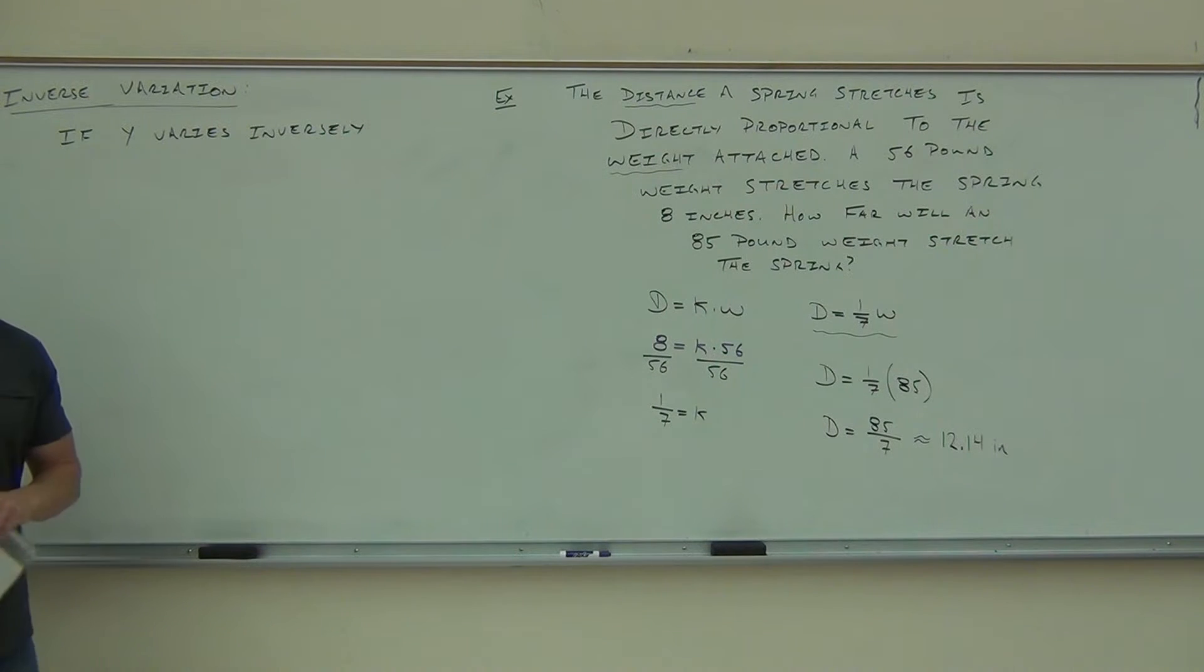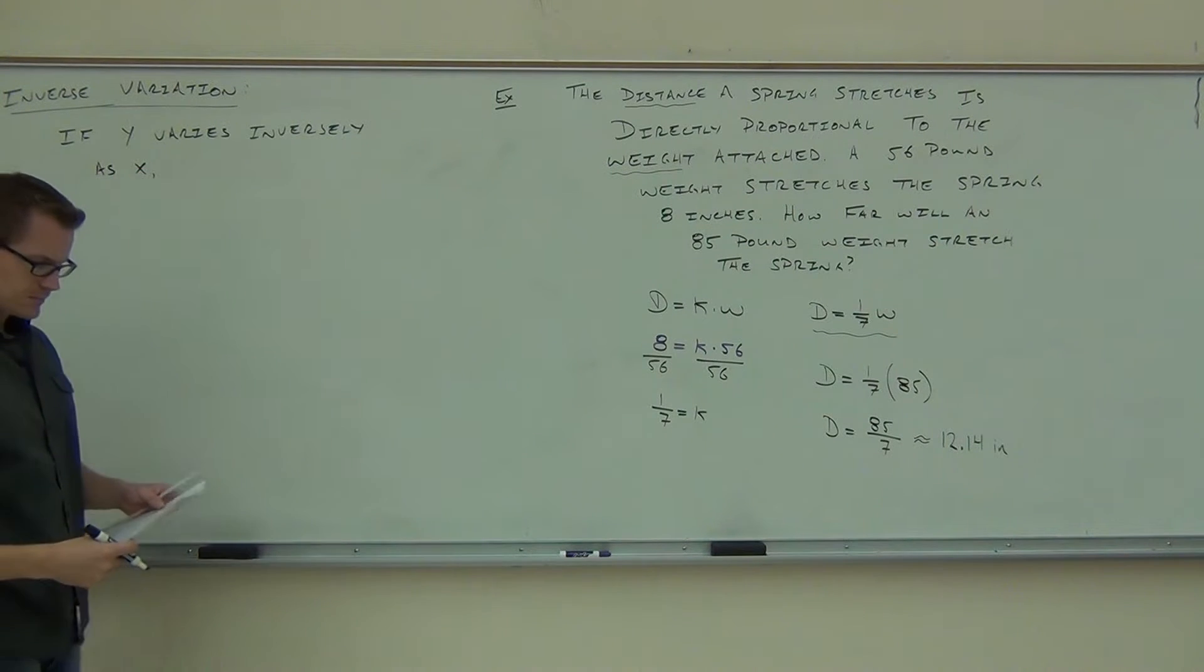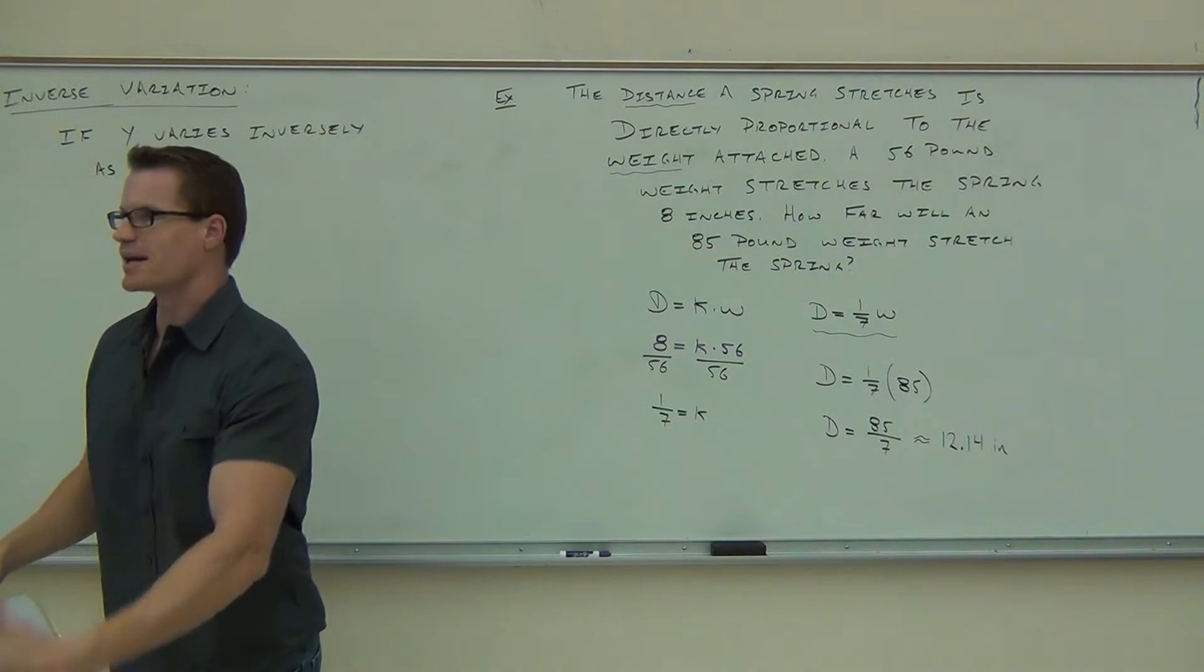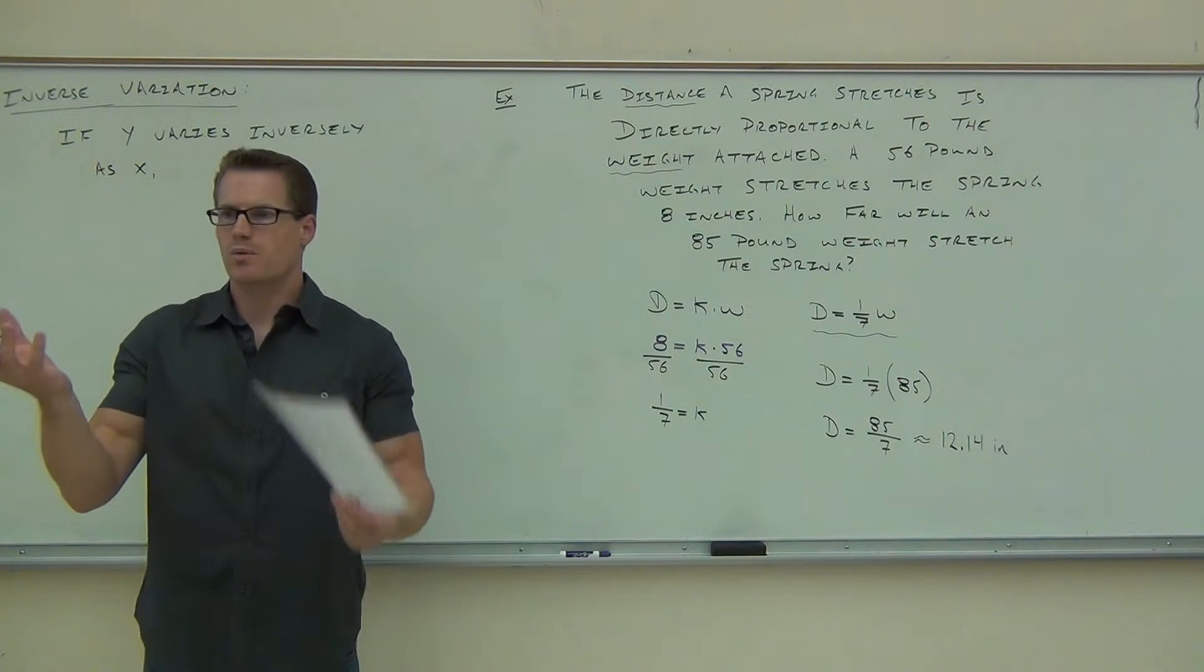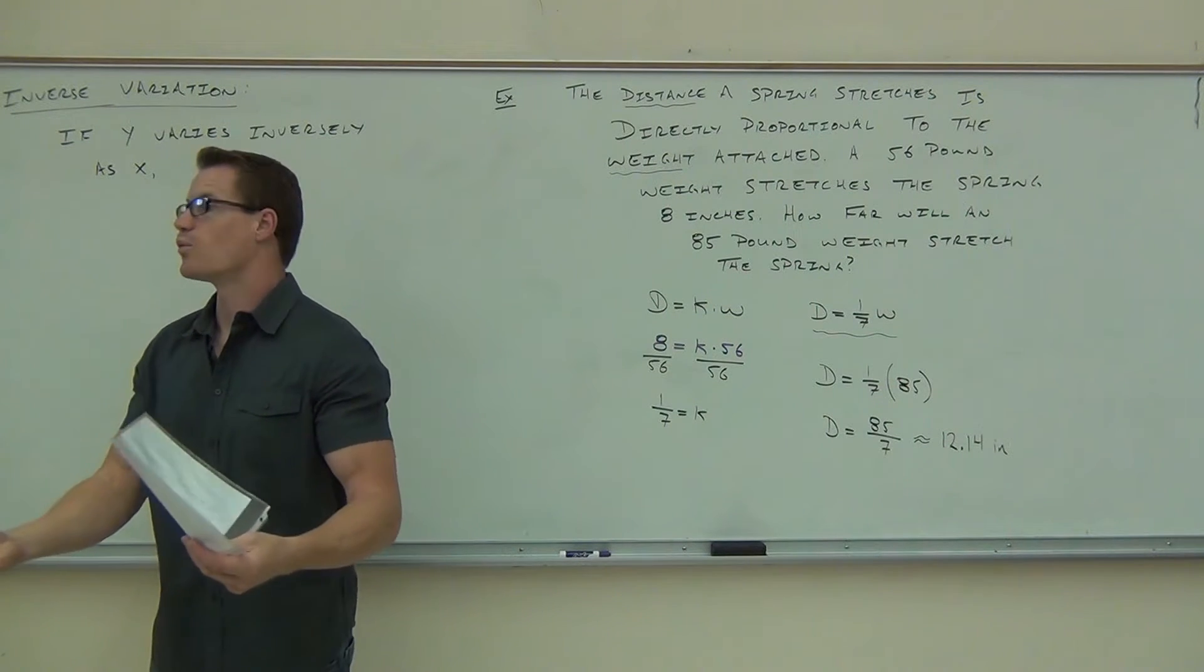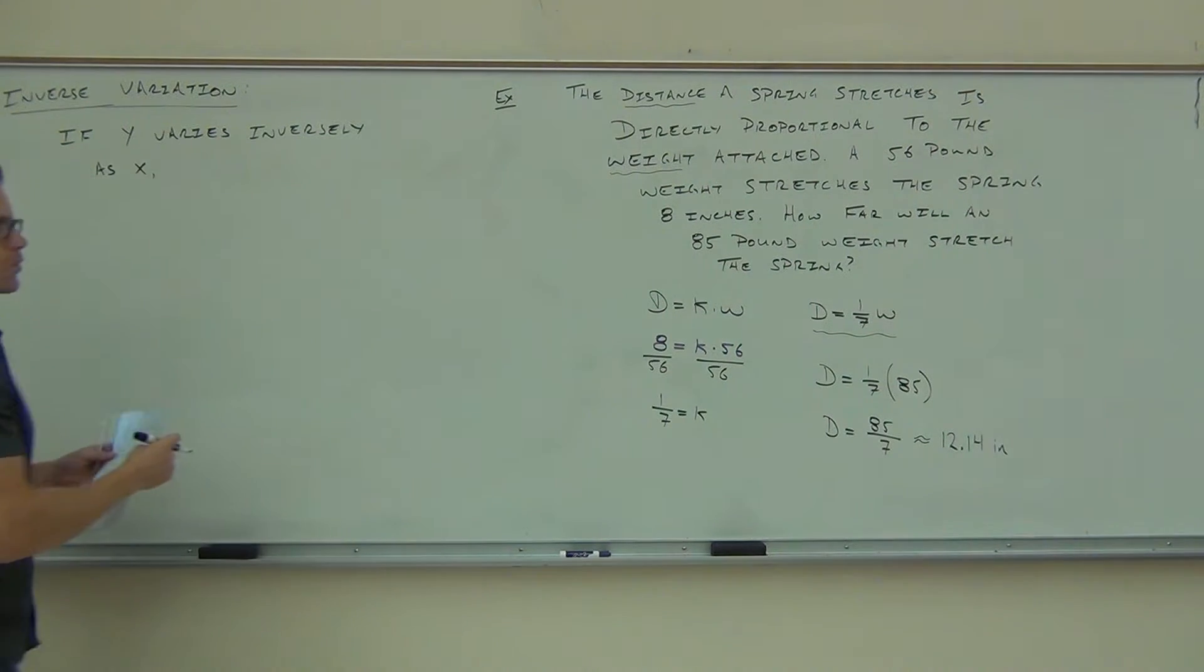So, the key word for us in this context is inversely. If Y varies inversely as X, then Y goes down as X goes up. And this is the opposite of direct. X went up and Y went up. In this case, X goes down and Y goes up. Or, X goes up and Y goes down. It's that relationship.